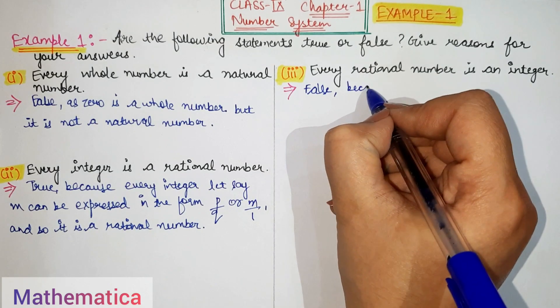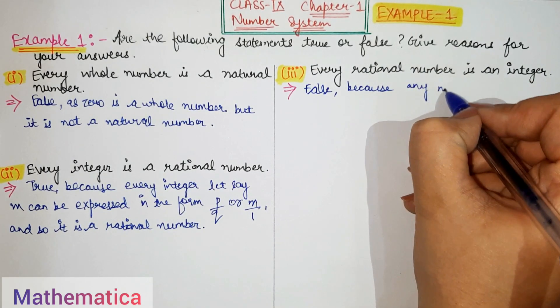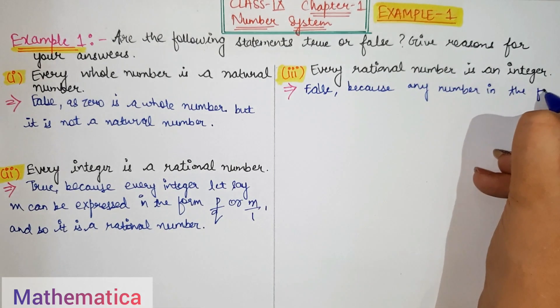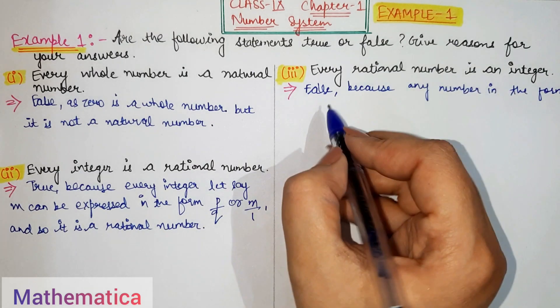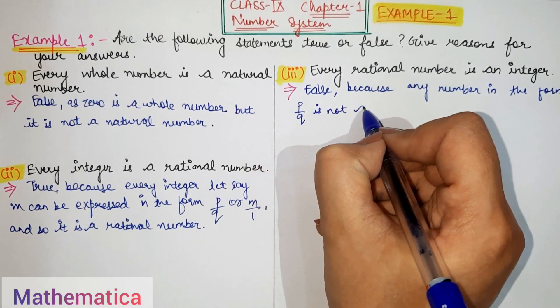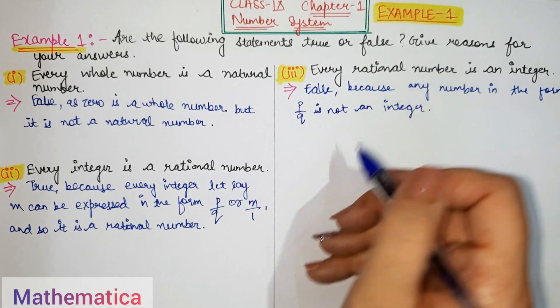Because any number in the form, which form? P by Q is not an integer.